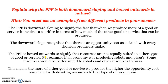Explain why the PPF is both downward sloping and bowed outwards in nature — this is another really important distinction, and you have to use an example of two products in your answer. The PPF is downward sloping because every decision has an opportunity cost. The more we produce of one good or service, the less we can produce of another. For example, if we've got two things — apples and oranges — whenever we make more apples, we have to give up oranges. The downward sloping nature of the PPF represents that every decision requires a trade-off, and that opportunity cost may be the same throughout or different at different points.